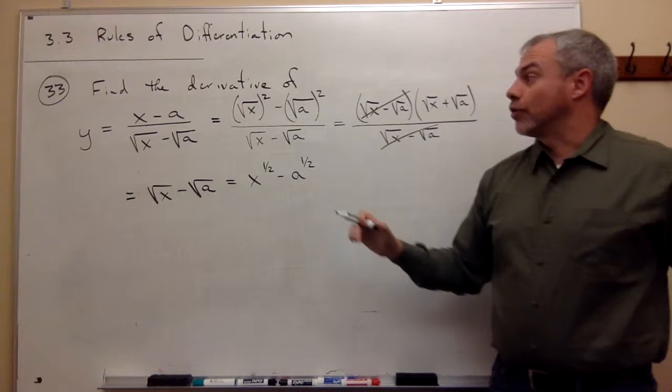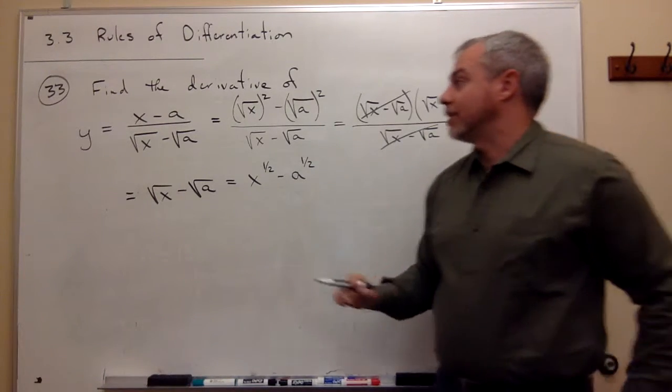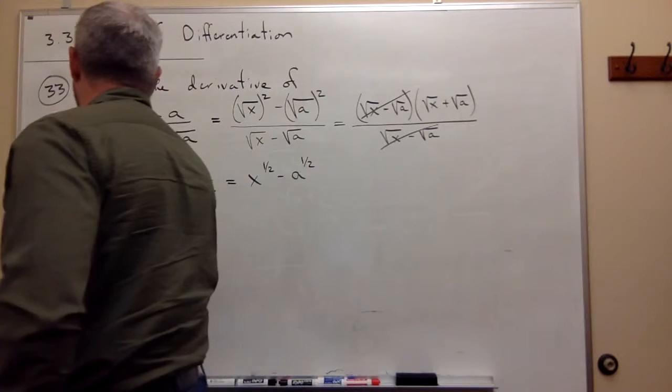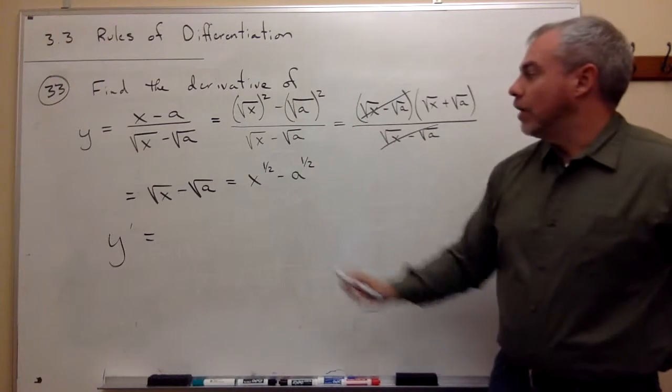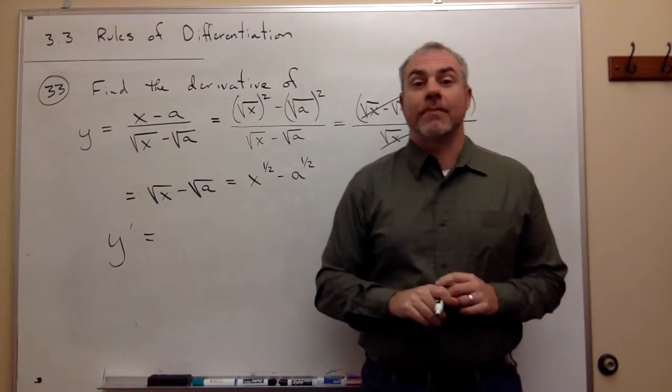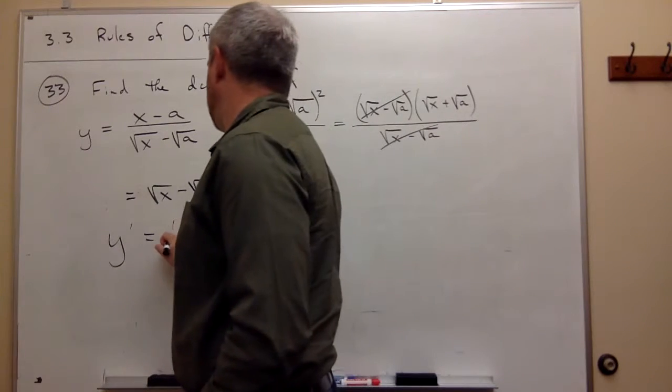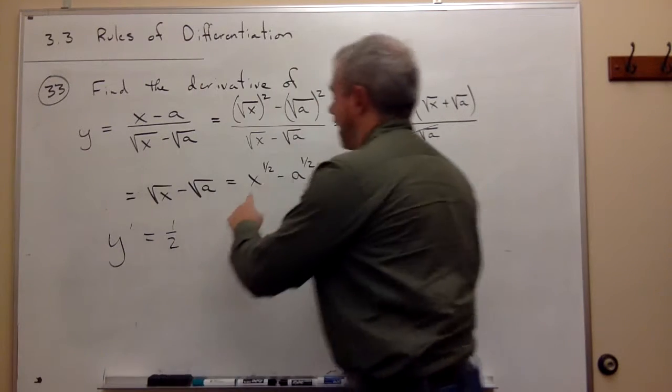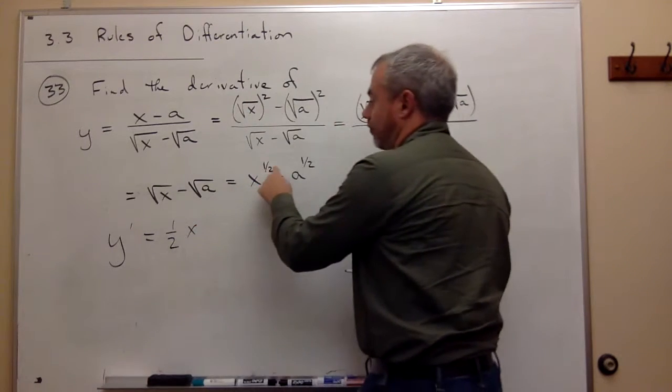Now that it's in a nice form, I can use the power rule on these and get the job done. So now I want to say, what's the derivative y prime? Well, here I've got x to the 1 half power. So if I use the power rule, I bring down the power, which is 1 half. And then I have x to the 1 half minus 1.